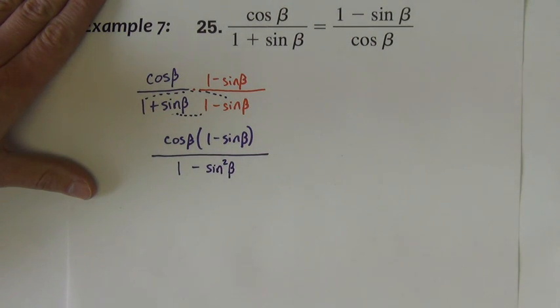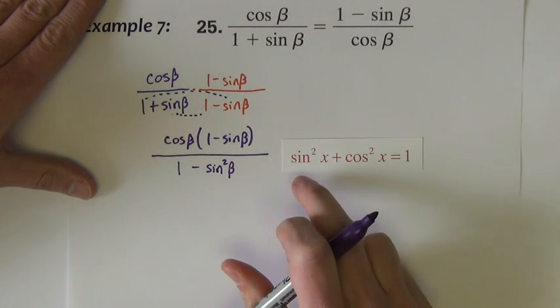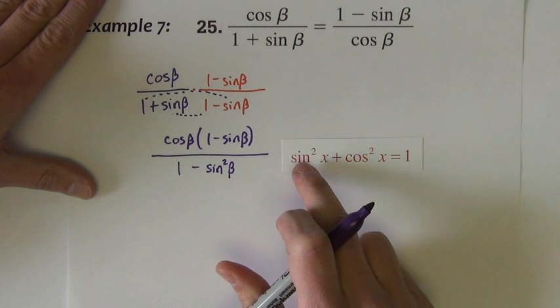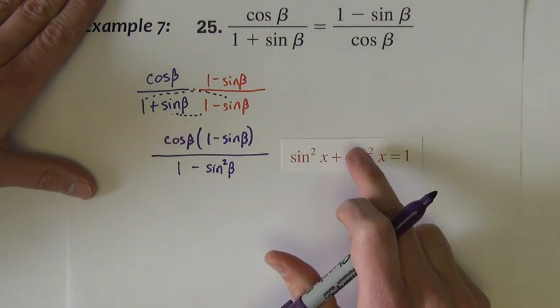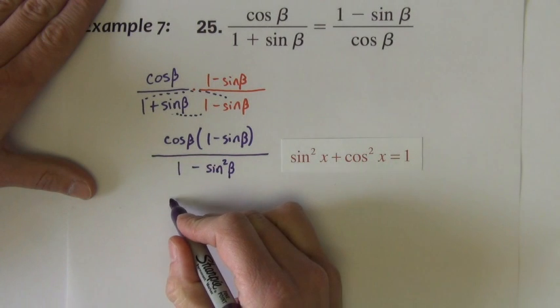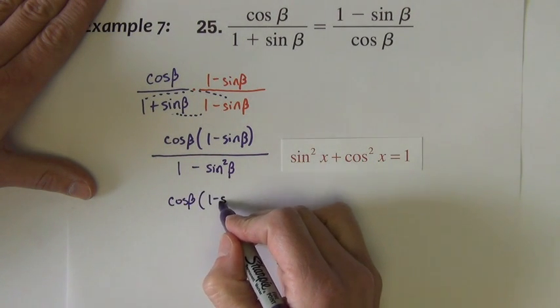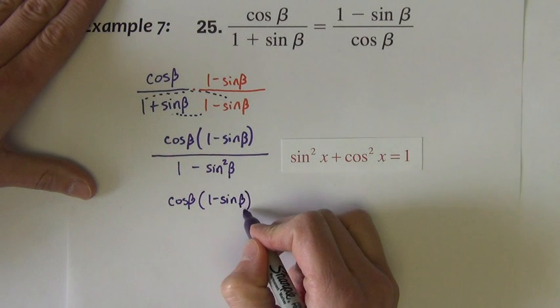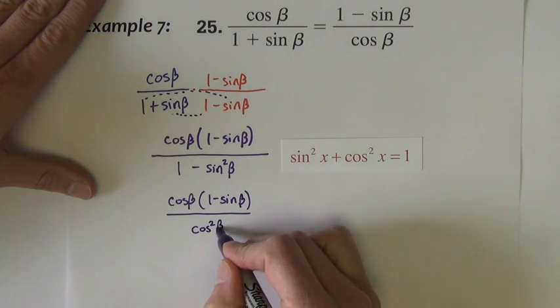So I've got a sine squared that leads me to a Pythagorean identity. 1 minus sine squared would be equal to cosine squared. So this becomes cosine beta times 1 minus sine beta over cosine squared beta.